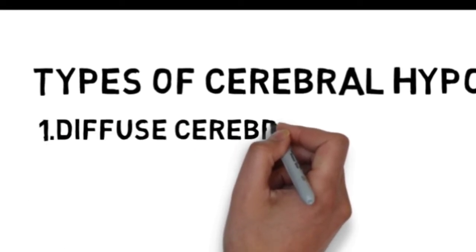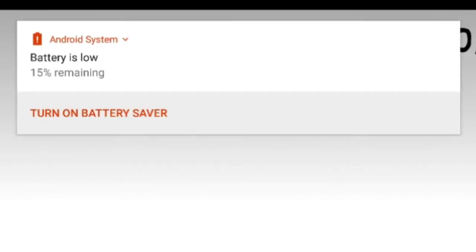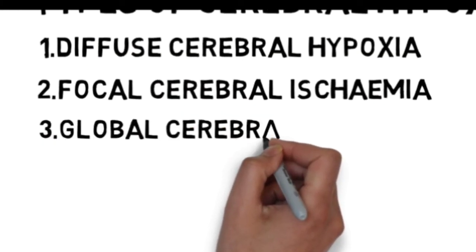Now let's see the types of Cerebral Hypoxia. First is Diffuse Cerebral Hypoxia. Second is Focal Cerebral Ischemia. Third is Global Cerebral Ischemia. And the fourth one is Massive Cerebral Infarction.